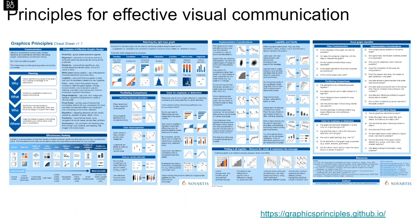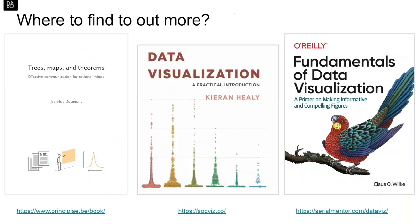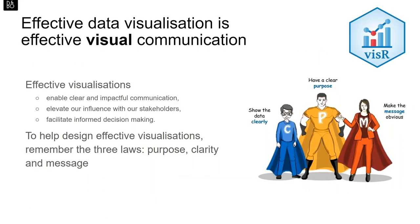If you're interested to learn more about the three laws and the principles introduced today, visit graphicsprinciples.github.io. There is a cheat sheet there that summarises many of these principles, developed using R. There are also other great resources — the book by Jean-Luc Dumont on scientific communication is one everyone should read. For data visualisation specifically, I would recommend the book by Kieran Healey and the book by Klaus Wilke, which focus not only on principles of data visualisation but also on how to do this in R. Effective data visualisation is effective visual communication — effective visualisations enable clear and impactful communication, evaluate our influence with stakeholders, and facilitate informed decision making. Remember the three laws: purpose, clarity, and message.